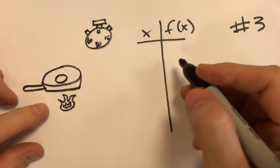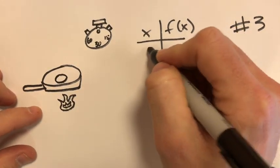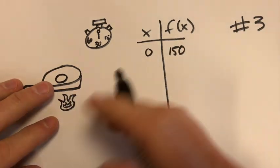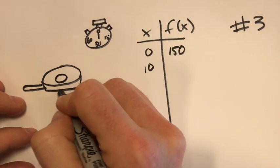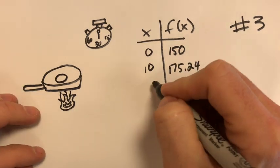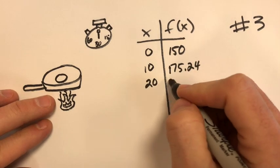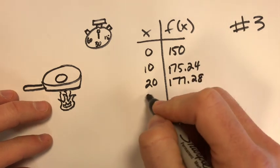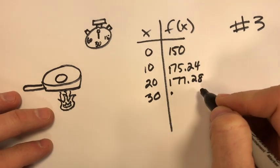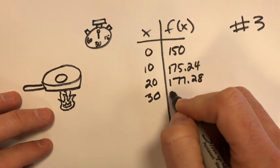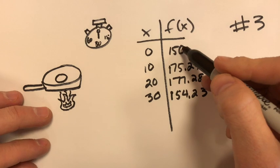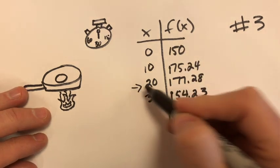Right here we've got the skillet heated up. At zero seconds it's 150 degrees and we just turned this on. Now after 10 seconds it's heated up even more, now it's 175, so it's hotter. After 20 seconds it's still on, 177.28. And after 30 seconds, still going up, excuse me, sorry, after 30 seconds it's now going down, 154.23. So it looks like it got turned off maybe somewhere around the 20 second mark.